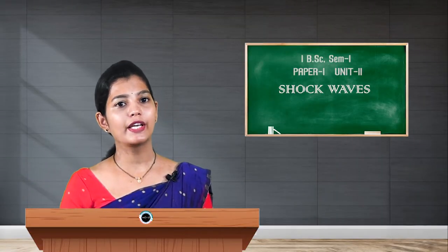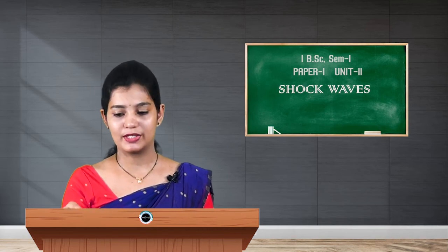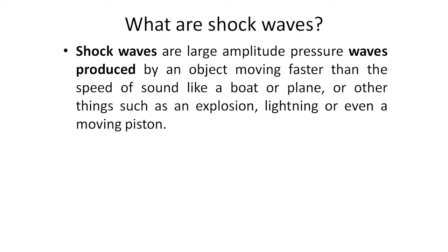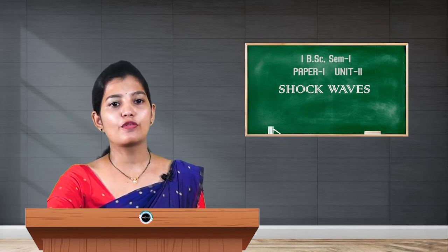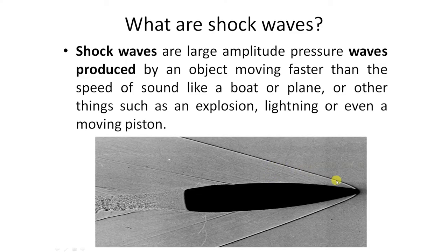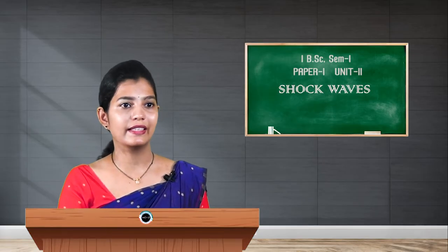Objects moving greater than the speed of sound will generate shock waves. This is a diagram of a fast-moving bullet, and the traces of shock waves are shown here. Since the speed of the bullet is greater than the speed of sound, the traces of shock waves appear in a conical shape. Now, how is a shock wave created?